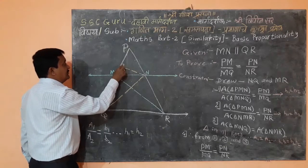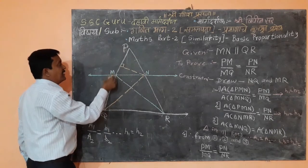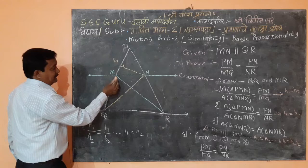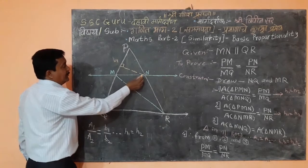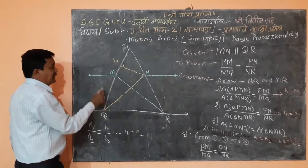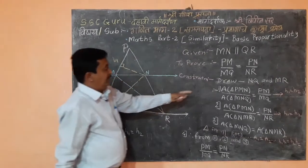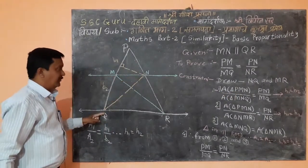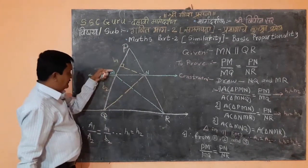We have drawn the height from vertex M on to side PM. Now in triangle PMN and triangle MNQ, we have drawn the height from N. This height is B1 for triangle PMN and B2 for triangle MNQ. The height is the same for both triangles. Therefore, area of triangle PMN upon area of triangle MNQ is equal to B1 upon B2, that means PM upon MQ.